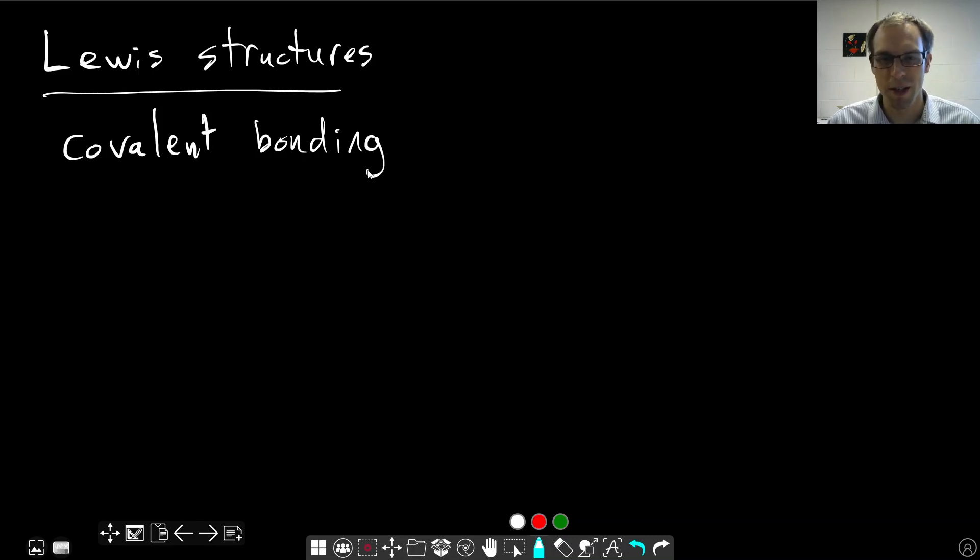As we go throughout this chapter, we'll see even within covalent bonding, there is a little bit of ionic. Sometimes electrons are pulled more towards something than another. Anyway, we'll get to that. But with Lewis structures, this is our way of representing covalent bonding within molecules.